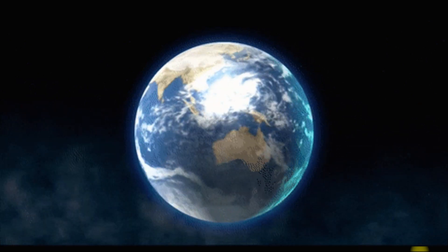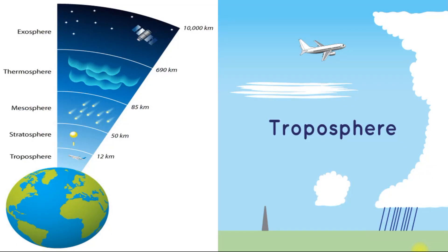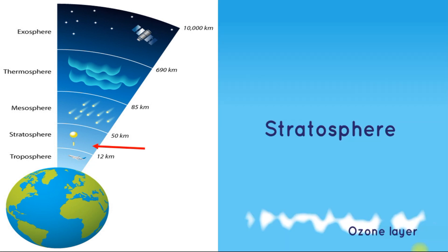Our planet Earth is surrounded by a thick layer of air called the atmosphere. There are mainly five layers in our atmosphere. The first layer, exactly above Earth's surface, is called the troposphere. This layer is very important because the air we breathe is present here, and changes in weather like rain, snow, and the water cycle occur in this layer.